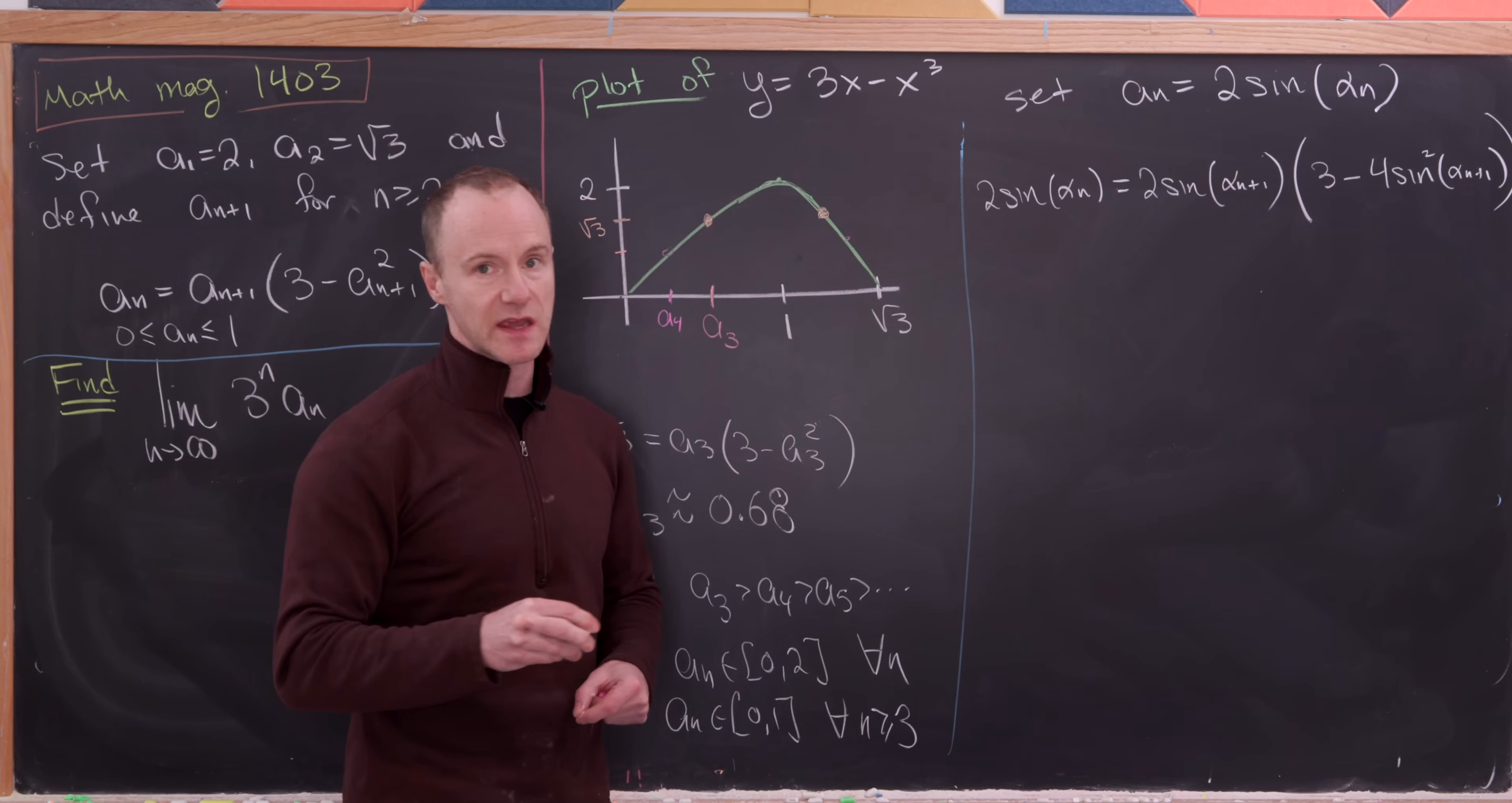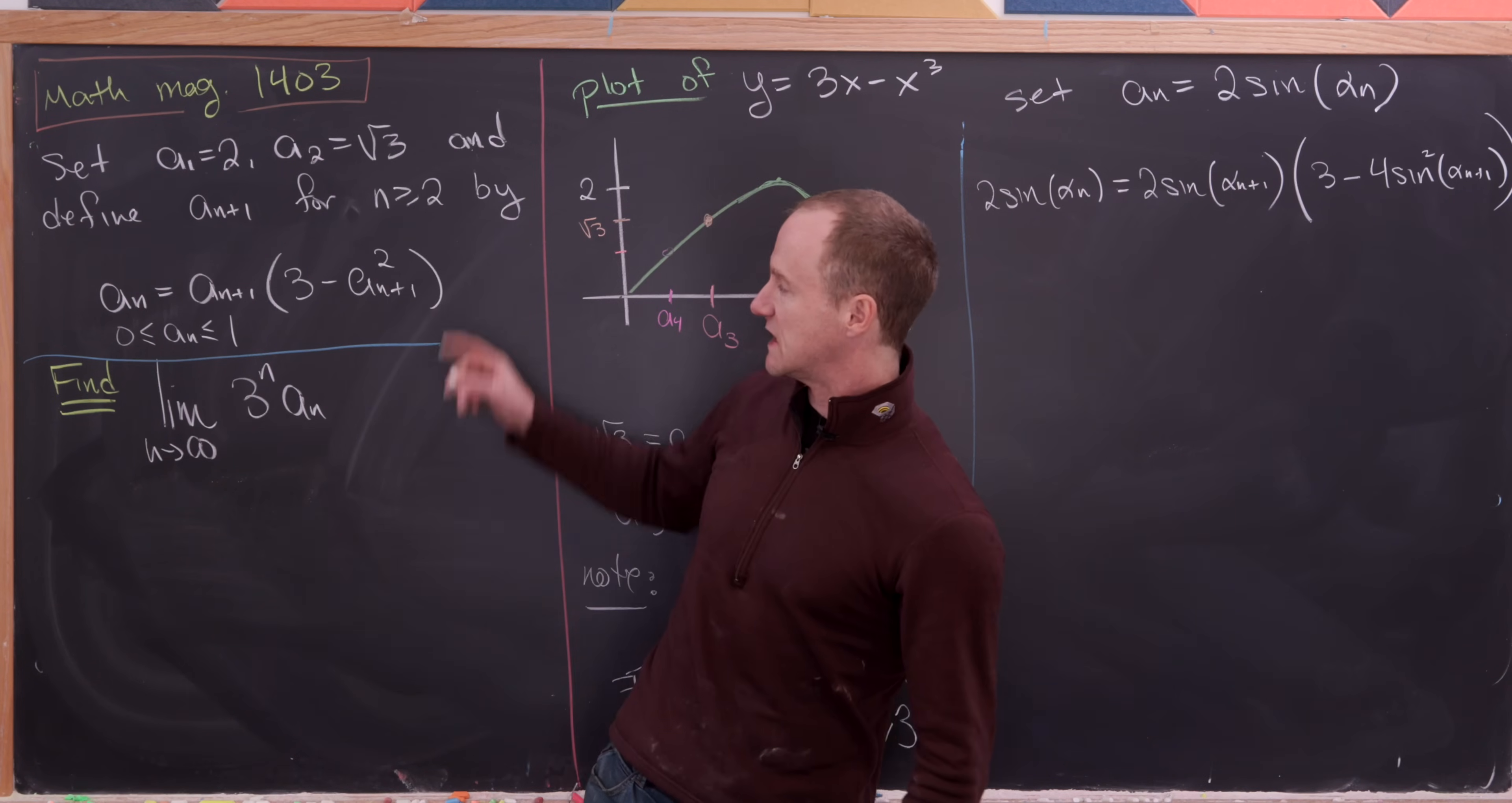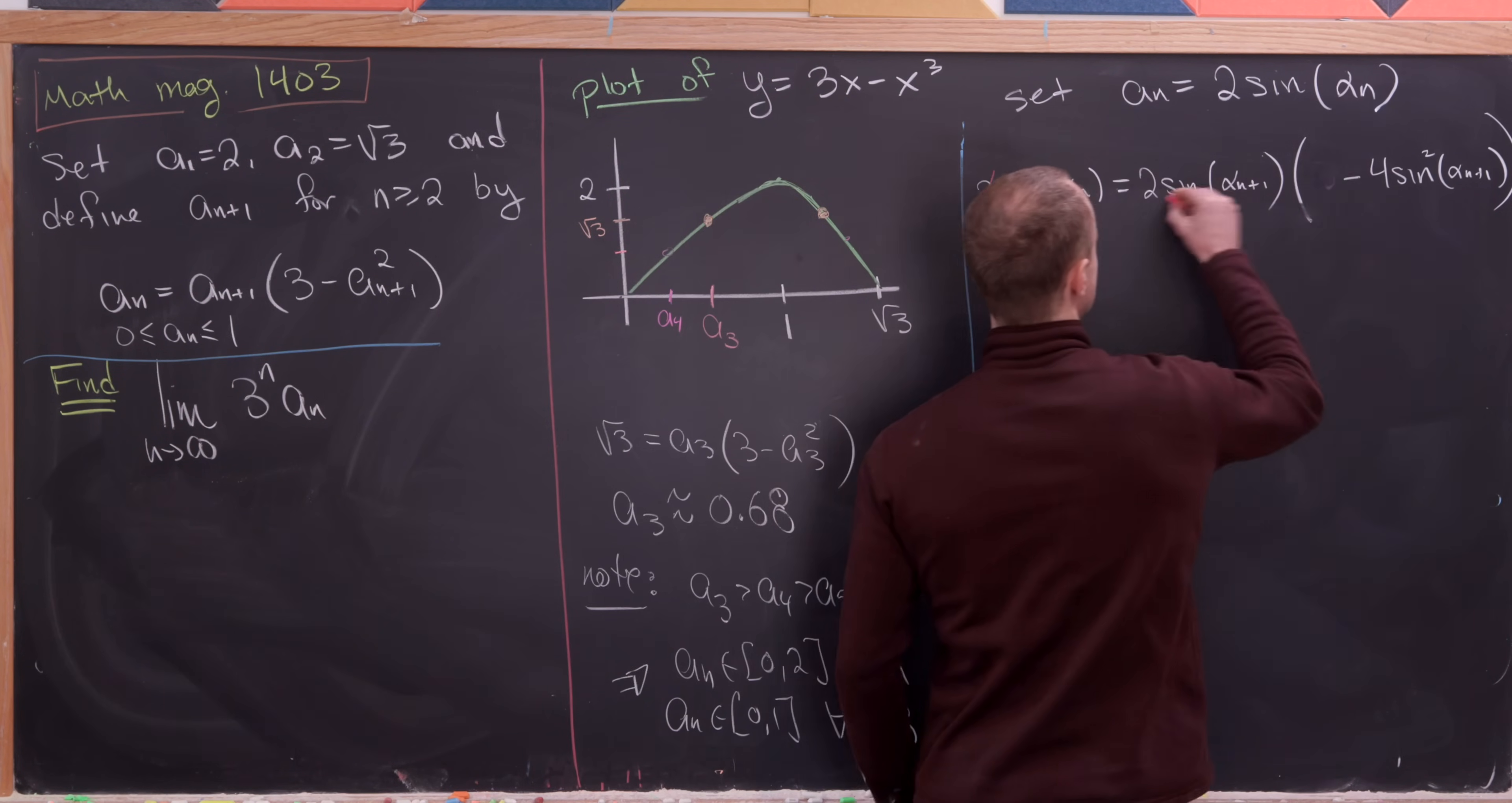and then times 3 minus 4 sine alpha n plus 1 quantity squared. So again, that's just plugging our sine version of our a sub n sequence into our recursion. So check it out.